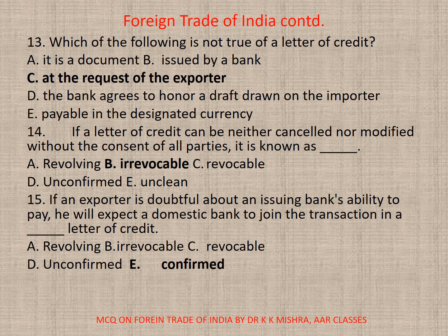Question 14: If a letter of credit can be neither cancelled nor modified without the consent of all parties, it is known as dash. Options: A. Revolving, B. Irrevocable, C. Irrevocable, D. Unconfirmed, E. Unclean. The correct option is B — Irrevocable.